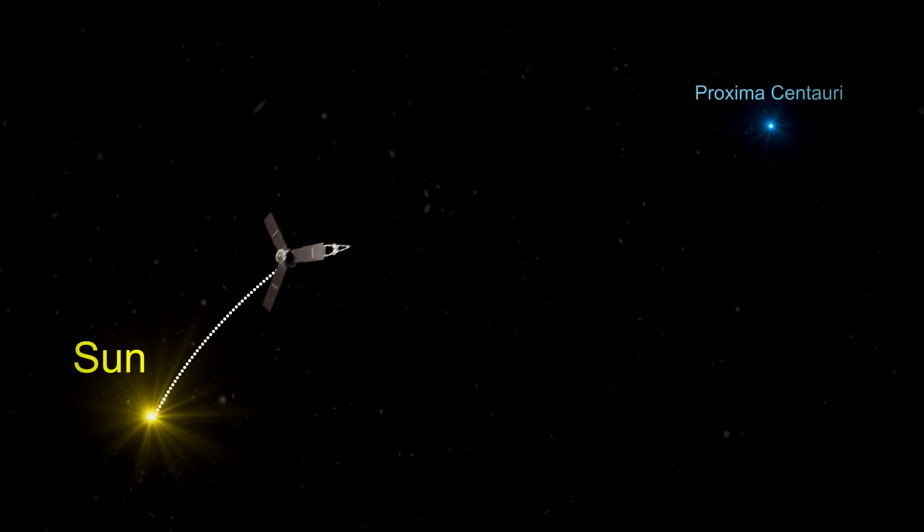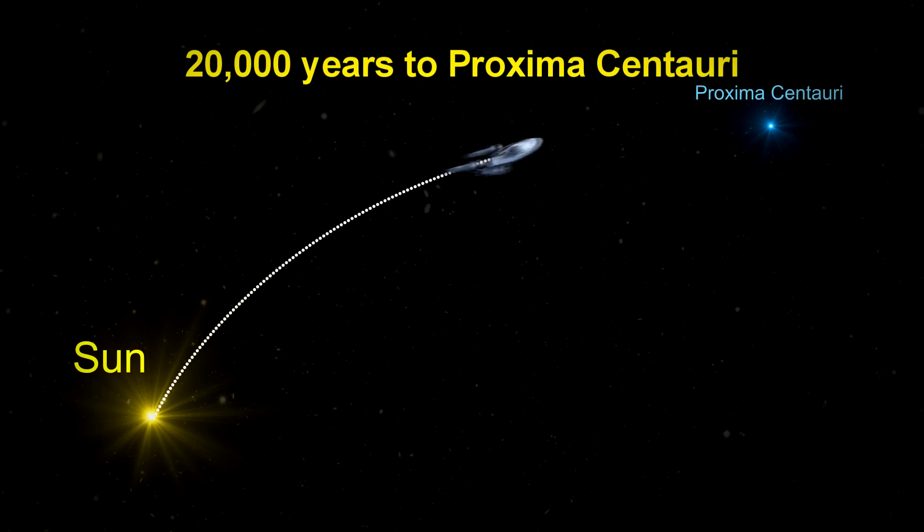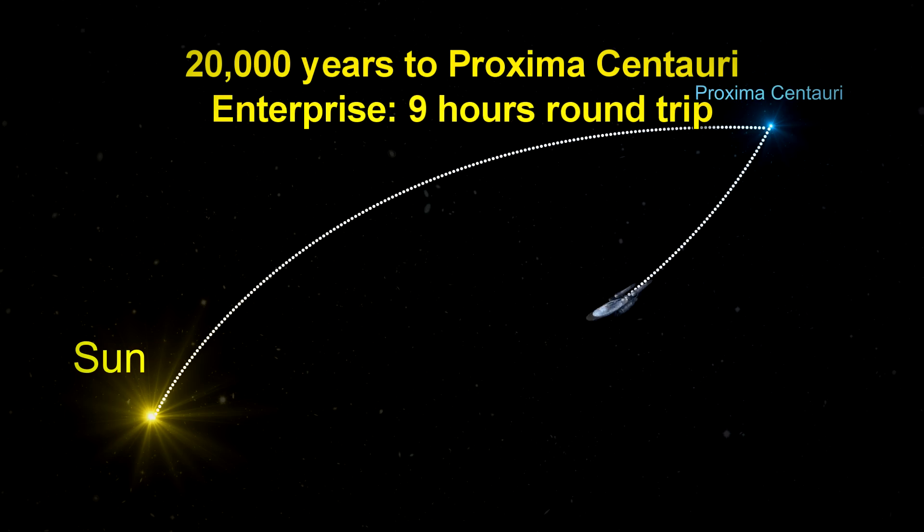But at this rate, it would take 20,000 years to reach the nearest alien planet, Proxima Centauri. If we had warp drive like the Enterprise, we could make it a day trip. There and back in only nine hours.